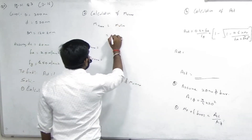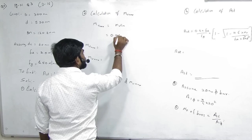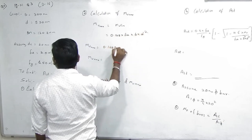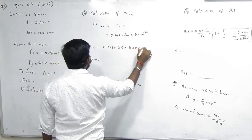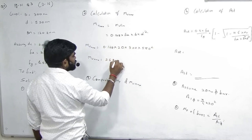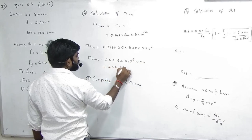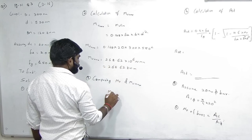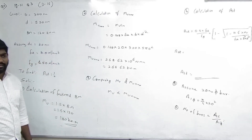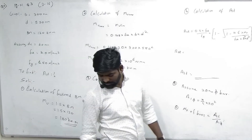Calculation of MU.max: MU.limit = 0.138 × FCK × B × d². Substituting: FCK=20, B=300, d=550 squared. Answer = 268.62 × 10⁶ Newton dot mm = 268.62 kNm. Comparing MU (180) and MU.max (268.62) — MU is less than MU.max. Correct, so singly reinforced formula apply hoga.